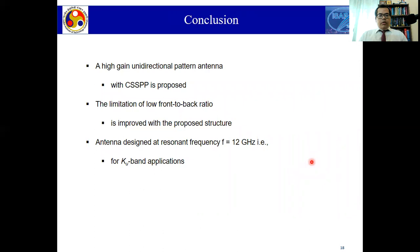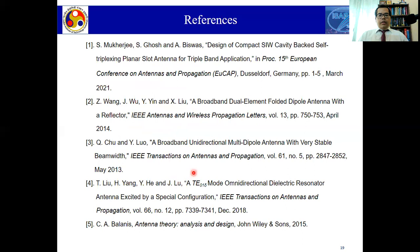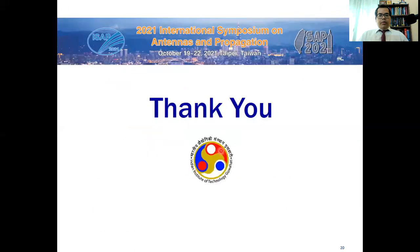In conclusion, we have designed a high-gain unidirectional radiation pattern antenna using the cylindrical SSVP structure. We have overcome the limitation of low front-to-back ratio by using sidewalls and reflectors, along with the integration of the cylindrical DRA with the cylindrical SSVP structure. The cylindrical ring DRA operates in the near-field to excite the SSVP structure, and this antenna resonates at 12 GHz for Ku-band applications. Thank you — I would be happy to handle any questions.